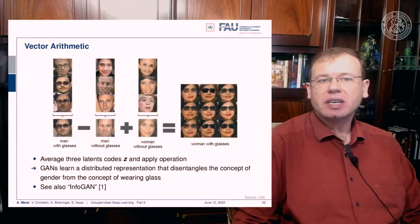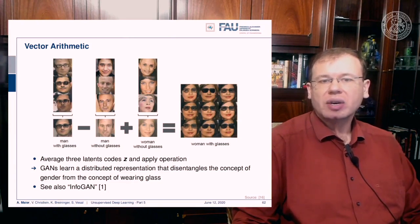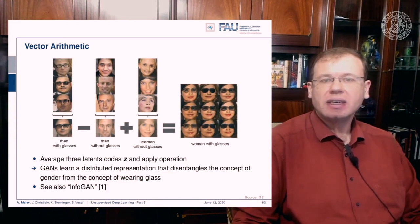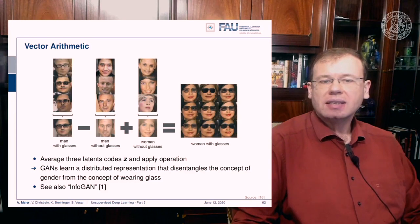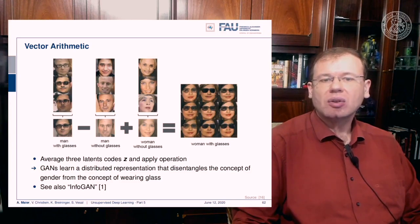Another interesting observation is that you can do vector arithmetic on generated images. For example, you can take the mean of three instances of 'man with glasses', subtract the mean of 'man without glasses', then add the mean of 'woman without glasses' — and what you get is 'woman with glasses'. This allows constrained generation for concepts where you don't have a conditioning variable. The GAN learns a distribution representation that disentangles gender from wearing glasses.